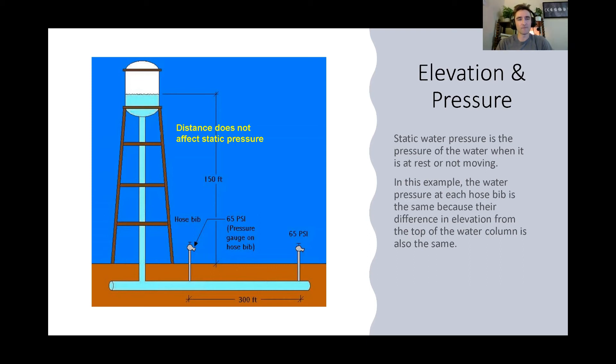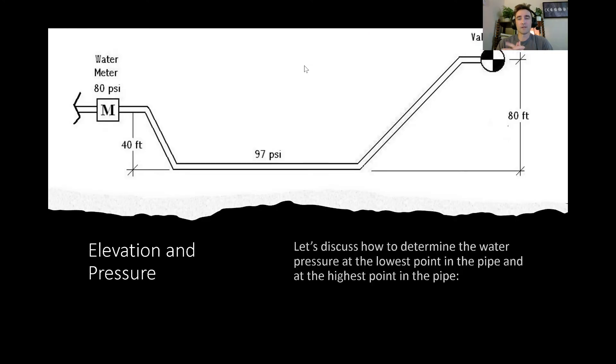So in this example, let's take a look at the drawing of the water tank. It's 150 feet to ground level. And we know at the hose bib, we have a pressure of 65 psi. And if it's really close to the water tank, it will be 65 psi. If we move 300 feet downstream, but the elevation stays the same, then it will be 65 psi. Exactly the same. So let's discuss how to determine the water pressure at the lowest point in the pipe and at the highest point in the pipe.